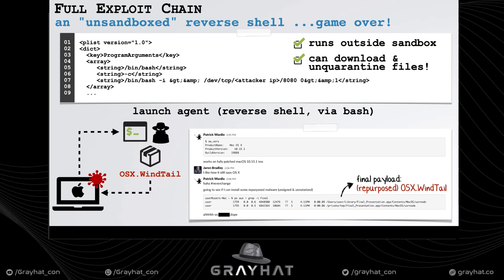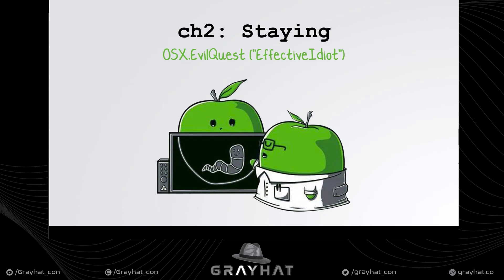The user clicks the document, end result: we have a persistent Mac backdoor installed on the system. Now that we have the ability to hack Macs, the question becomes what do we persist? We could use something like Windtail, but that's known and not that sophisticated. So what about some brand new Mac malware? We're going to talk about malware dubbed EvilQuest — though the malware author refers to it as Effective Idiot — describing how to analyze its code, its capabilities, and why it's perhaps the first true computer virus targeting macOS.